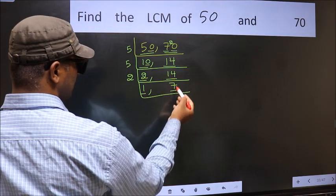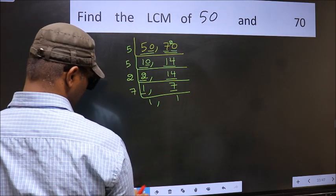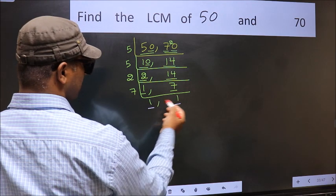So focus on the next number, 7. Since 7 is a prime number, 7 times 1 is 7. Now we got 1 in both places.